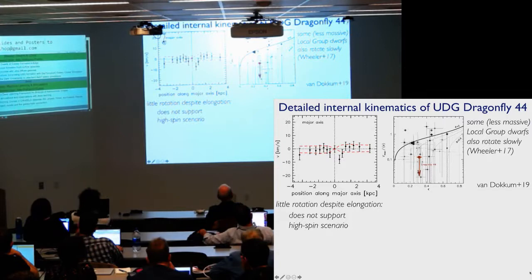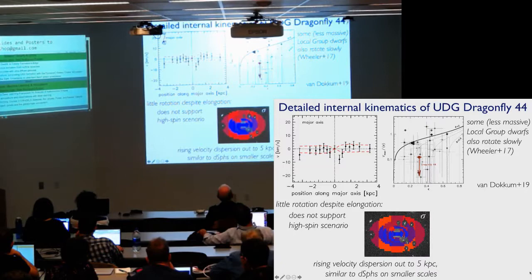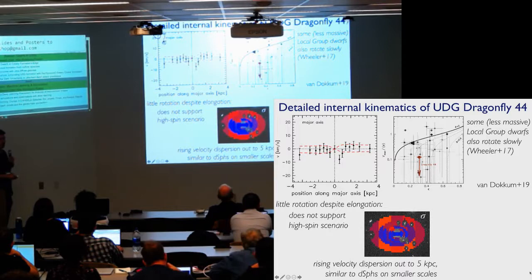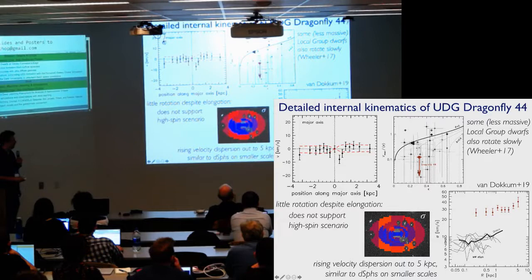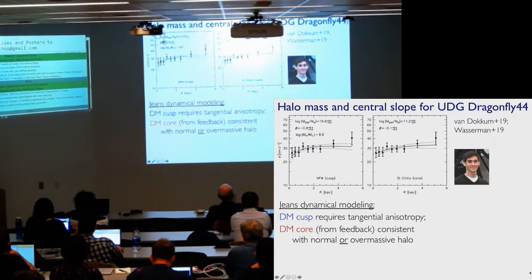So what about velocity dispersion? Here's a 2D map with blue to red shows you colder to hotter velocity dispersion. So the velocity dispersion is rising with radius. Here's what a 1D profile looks like. So this rising velocity dispersion with radius, like local group dwarf spheroidals, but a much higher mass and much farther out. That's a log scale here.